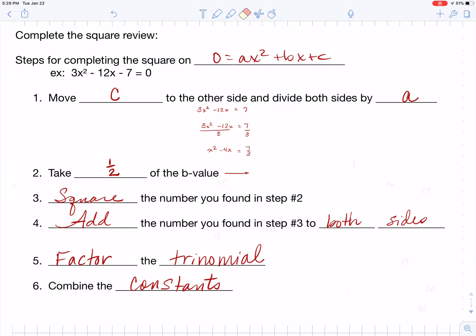Now, after you've done this, take half of your b value. Your b value right now is that negative 4. So you want to take half of negative 4. And when you take half of negative 4, you're going to get a negative 2. Now take that number and square it. So negative 2, if you square that, you're going to get a positive 4.